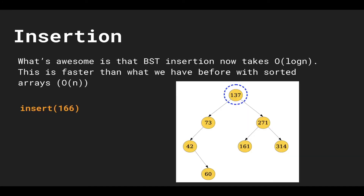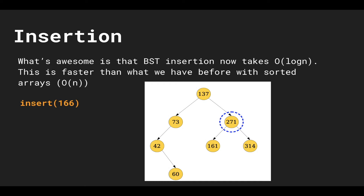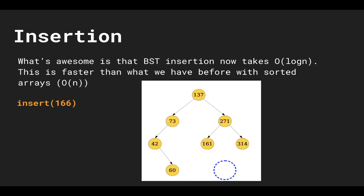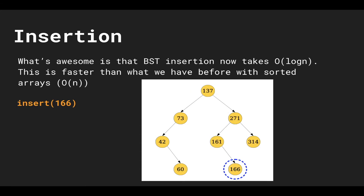Now let's look at insertion. The problem with sorted arrays was linear time because we had to find the correct spot. With BSTs, say we want to insert 166. We start at the root: 166 is greater than 137, so we go right. At 271, 166 is less than 271, so we go left into the left subtree. At 161, 166 is greater than 161, so we go right. The node there is null, so we insert 166 and link the pointer to the parent. Insertion is also O(log n) because we just trace a path down the tree of height O(log n).